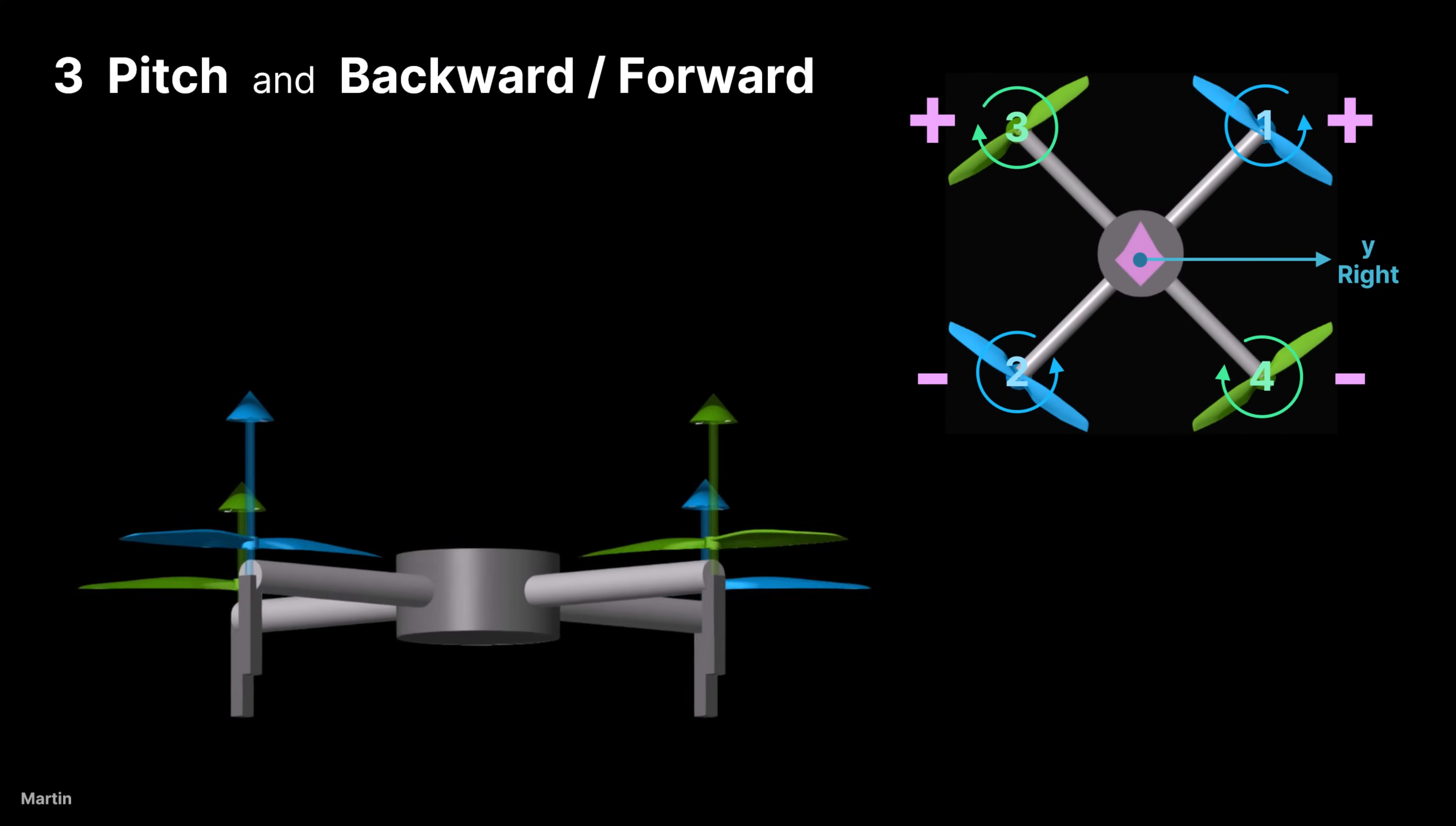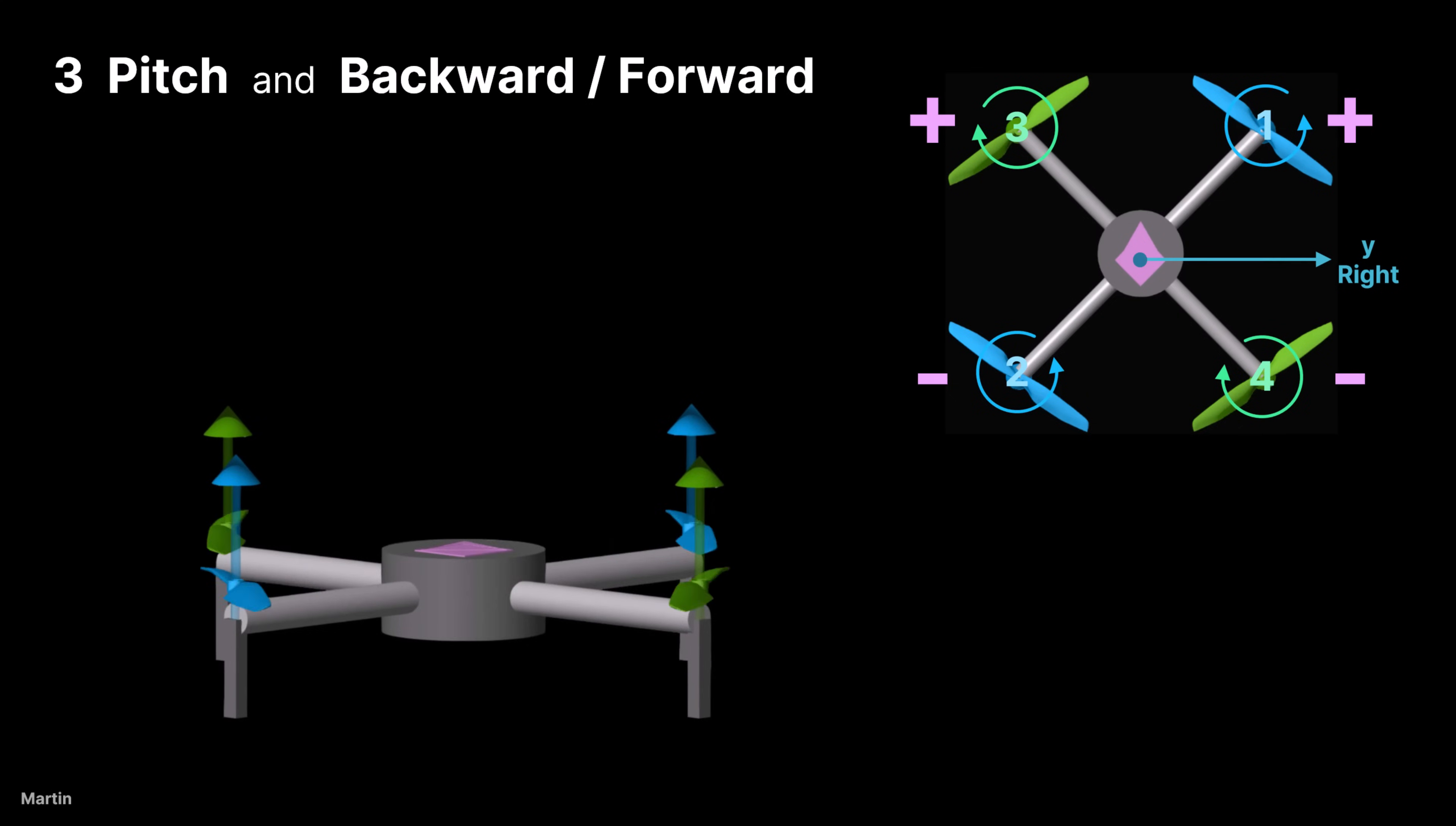To control the quadcopter to pitch backward, increase the speed of the front propellers and decrease the speed of the rear propellers. To pitch forward, do the opposite.